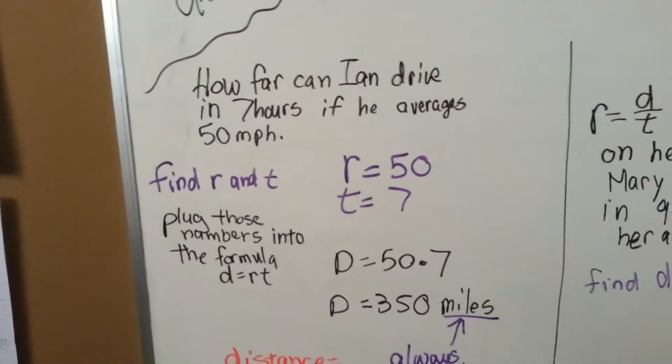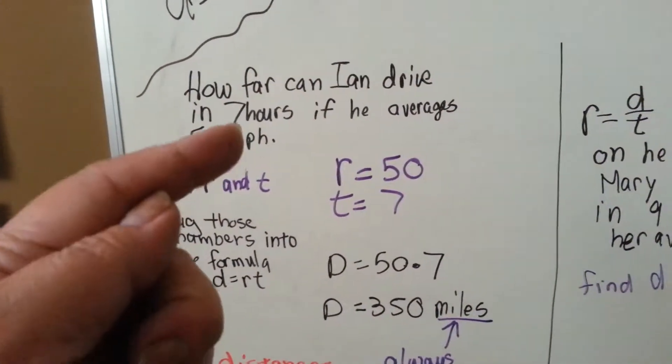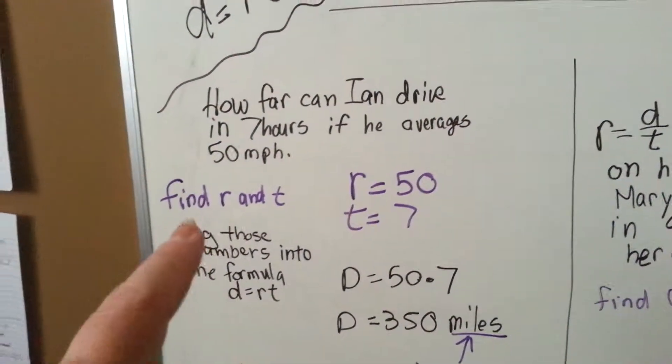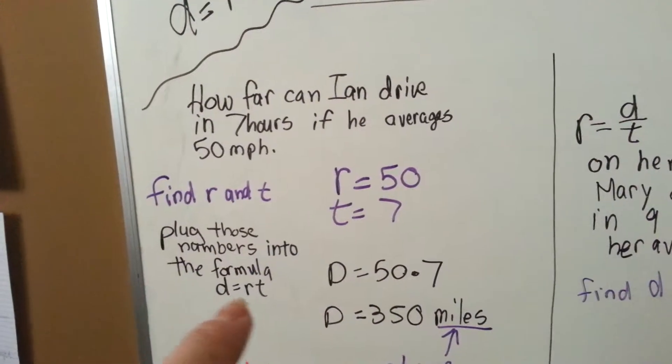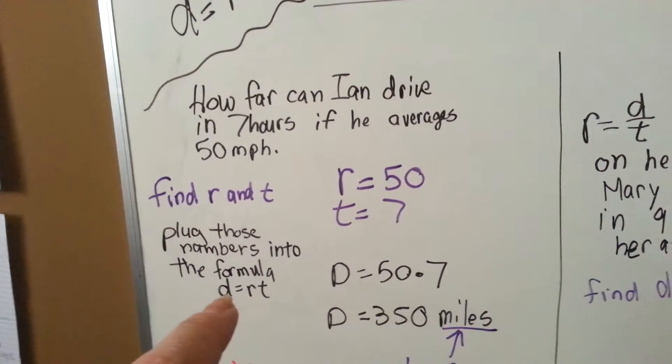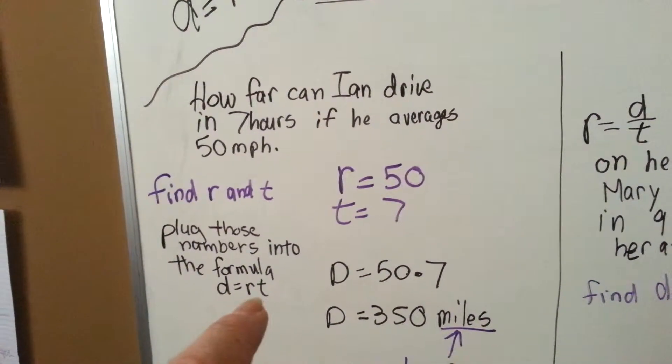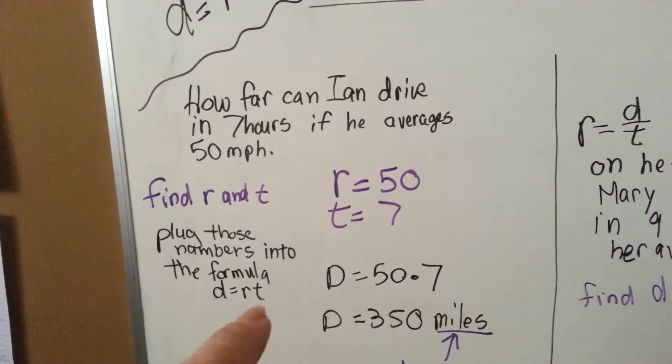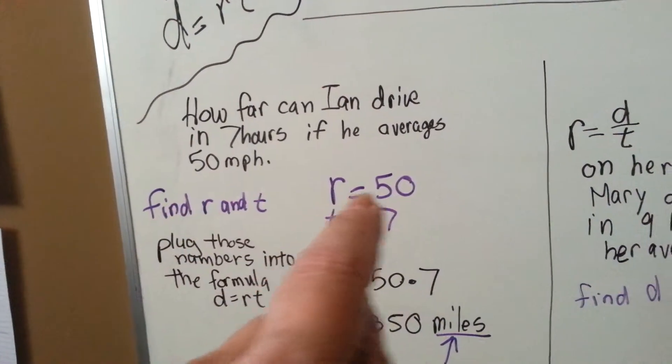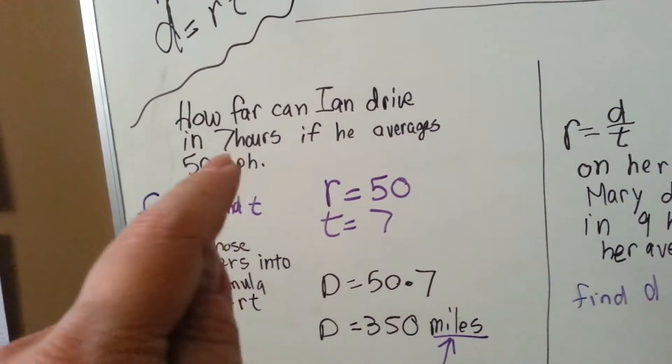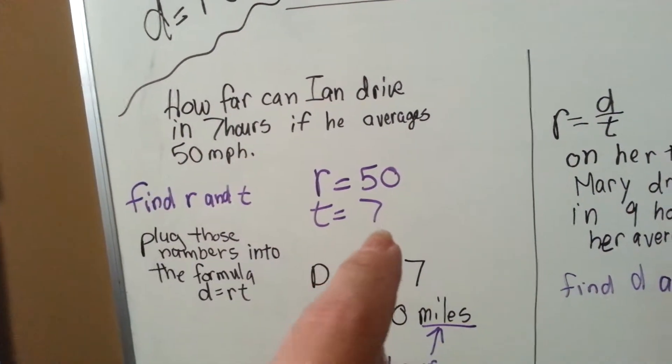How far can Ian drive in seven hours if he averages 50 miles an hour? So the first thing we have to do is find what the R and the T are because we need to use this formula. We're trying to find the distance, so we need to find what the R and T are to be able to multiply them. Well, his rate of speed is 50 miles an hour. The time that he spent doing it is seven hours.